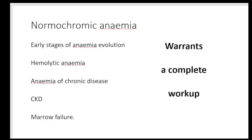Normochromic normocytic anemia is a big pandora's box — it usually presents in the early stages of anemia, so workup for iron, B12, and other causes is warranted. Hemolytic anemia including beta thalassemia in early stages may also appear normochromic normocytic. Anemia of chronic disorders, kidney failure, and bone marrow failure all present with a normochromic normocytic picture. A comprehensive patient evaluation, trial of treatment with iron and B12, and failure to respond to conventional treatment would warrant a complete workup.